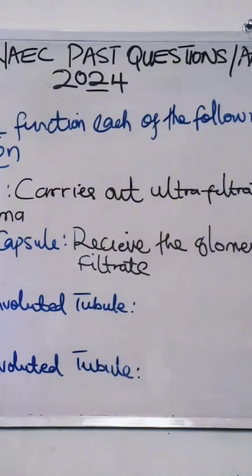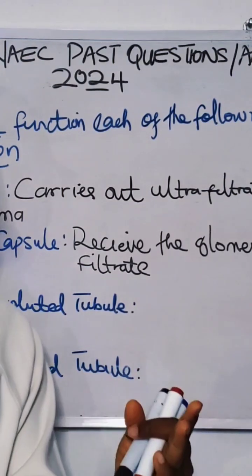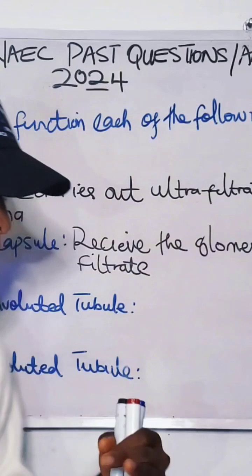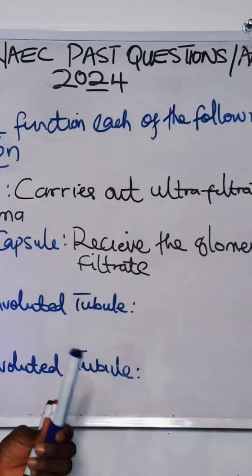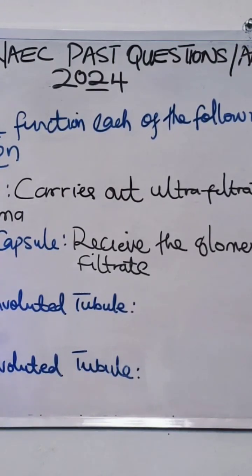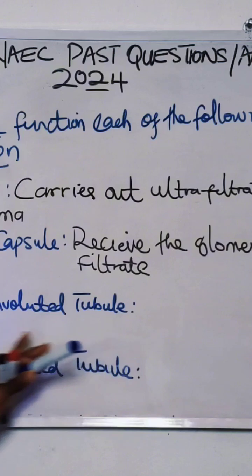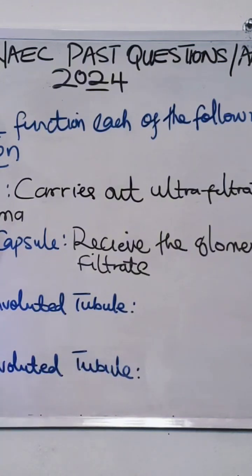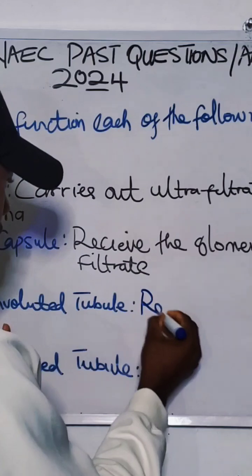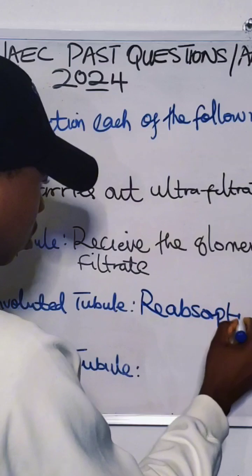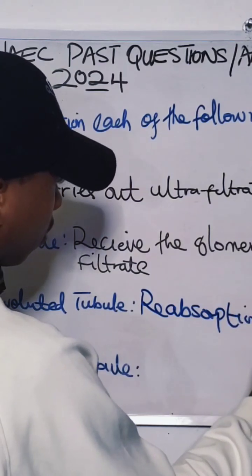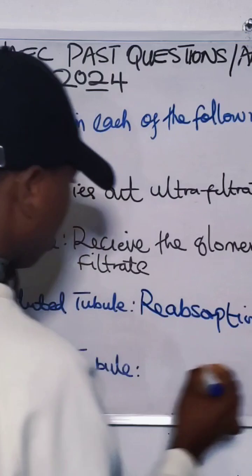Now, the proximal convoluted tubule. The major function of the proximal convoluted tubule — remember we have the proximal at the beginning and distal at the end — is to reabsorb. We have selective reabsorption occurring in the proximal convoluted tubule, specifically the reabsorption of important molecules.